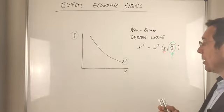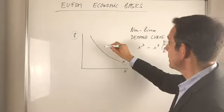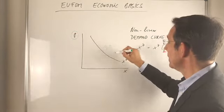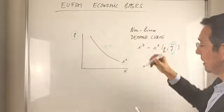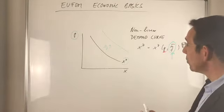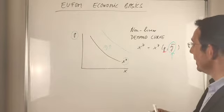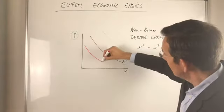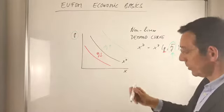So if you change now the income and let's say you increase income, then the demand function shifts to the right. And if you decrease income, then the demand function shifts to the left.